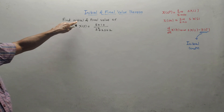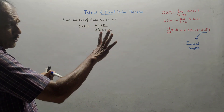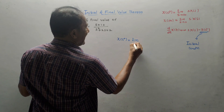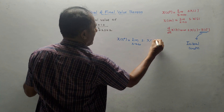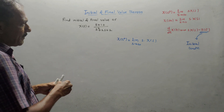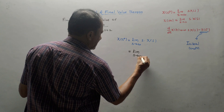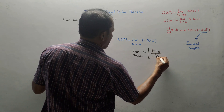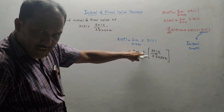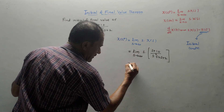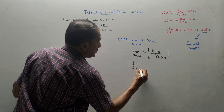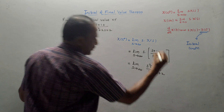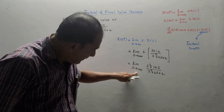Let us solve a few numericals. First problem: find the initial and final value of the given sequence. The initial value x(0⁺) equals the limit as s tends to infinity of s·X(s). Substituting X(s), it becomes: limit as s→∞ of s·(s+10)/(s²+2s+2). Multiplying through by s gives s²+10s upon s²+2s+2. If you put s=∞ directly, you get infinity over infinity, which is invalid.